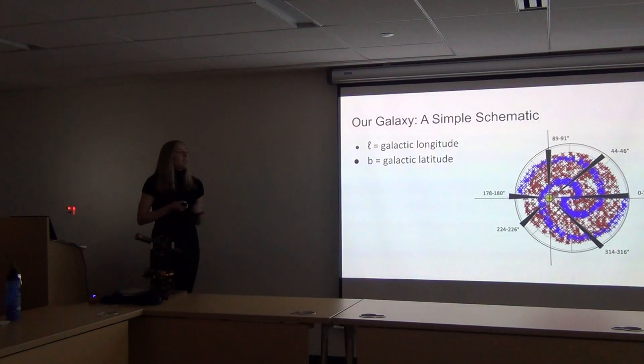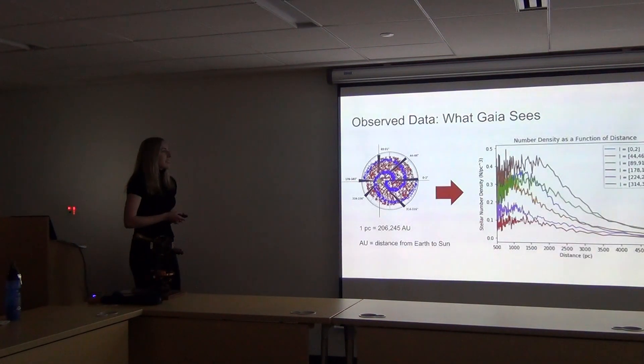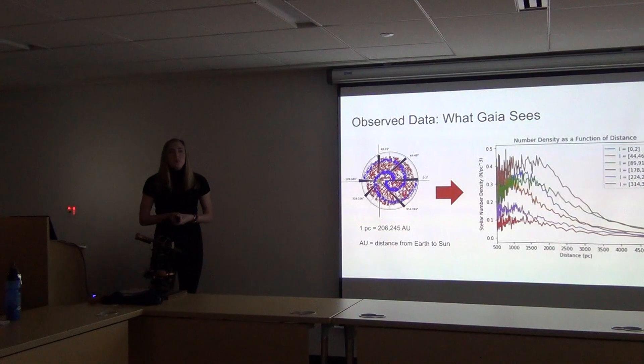And that angle is called galactic longitude. You can think of looking towards the galactic center, that's like a zero angle, and then the anti-galactic center would be 180, and then you can kind of plot along those angles in between. So, when we look in these directions, what do we see?